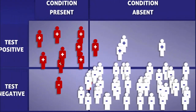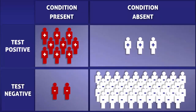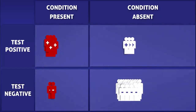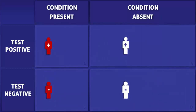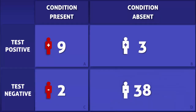To simplify the calculation, we will quickly organize this data into a 2x2 sample table. In doing so, we find that there were 9 true positives, 2 false negatives, 3 false positives, and 38 true negatives.